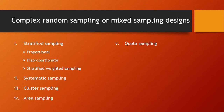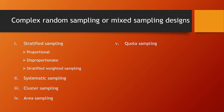Then there is quota sampling. In this method, each investigator engaged in the primary collection of data is assigned a quota for investigation. Each investigator has to investigate a number of units from the quota fixed to them. That is quota sampling.